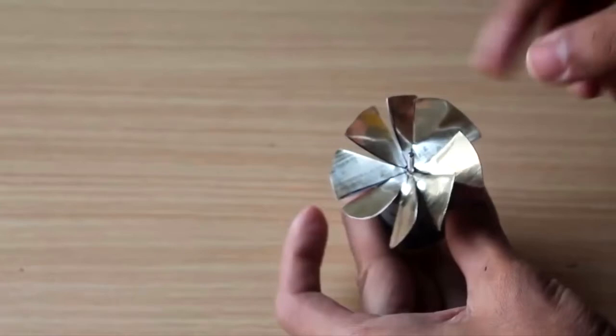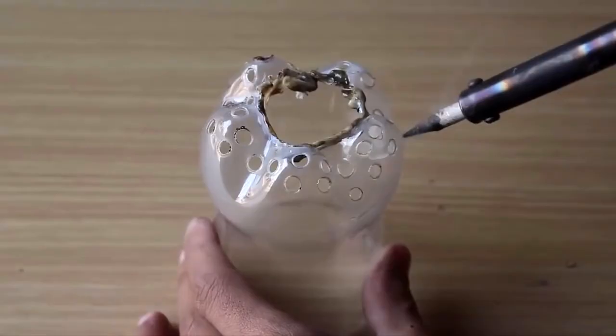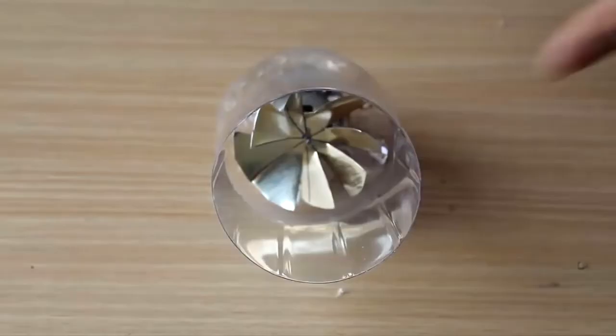He made use of a tin can to build the fan and connected it to a DC motor. For the inflow of air, he made a few holes on the bottle back to get the air flowing through the can and DC motor.